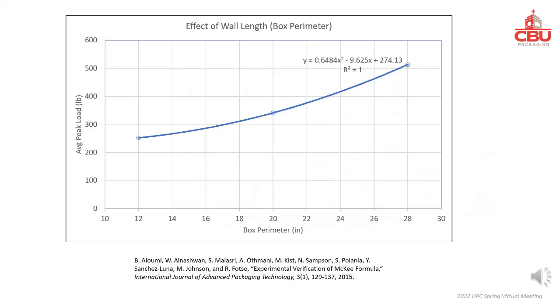This graph represents the data shown in the previous table. As box perimeter or wall length increases, the box compression strength increases.